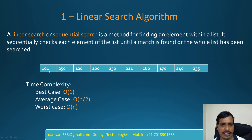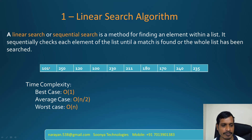We need to find the student with ID 101. Here 101 equals 101 — this is the first iteration, and we found the item. That means the time complexity is O(1). This is the best case.